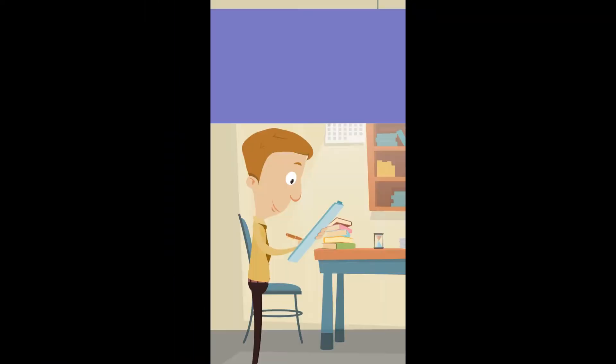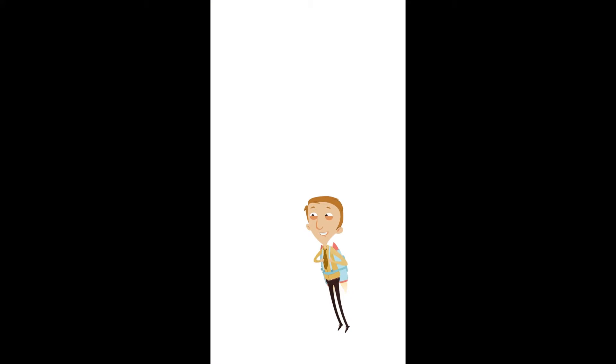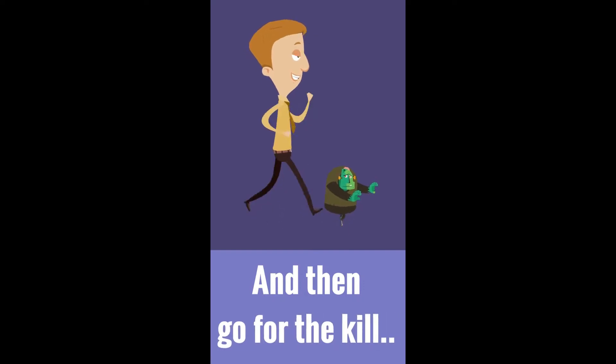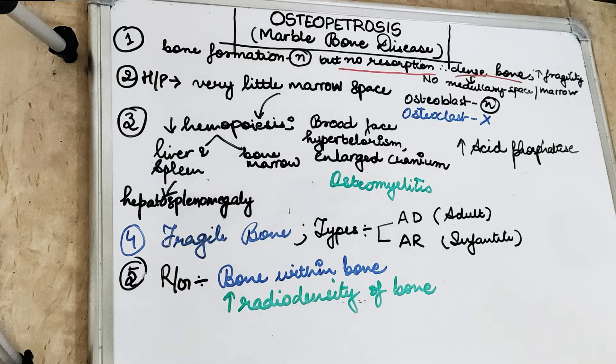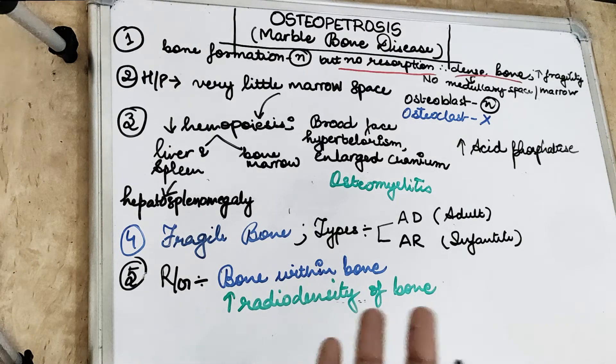Hey guys, this is Dr. Sangeet and welcome back to another lecture of Dental Pachala, where we help you understand and learn dentistry in a better and easy way. In this video we are going to talk about the diseases of bone. Welcome back to another 5 in 5 series, where we cover each topic under 5 points in 5 minutes. Today's topic is the Albert-Sinburk disease, also known as the stone bone disease or marble bone disease, which we also know as osteopetrosis.